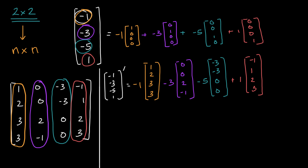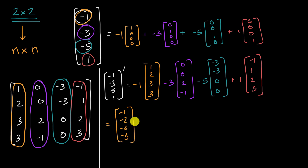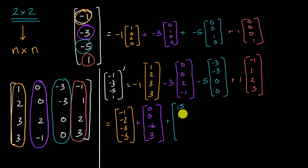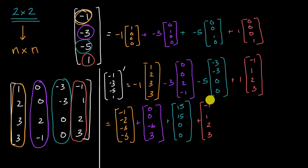What is this going to be equal to? Multiplying through: negative one times (1, 2, 3, 3) gives (-1, -2, -3, -3). Negative three times (0, 0, 2, -1) gives (0, 0, -6, 3). Negative five times (-3, -3, 0, 0) gives (15, 15, 0, 0). And one times (-1, 1, 2, 3) gives (-1, 1, 2, 3). And we are in the home stretch.